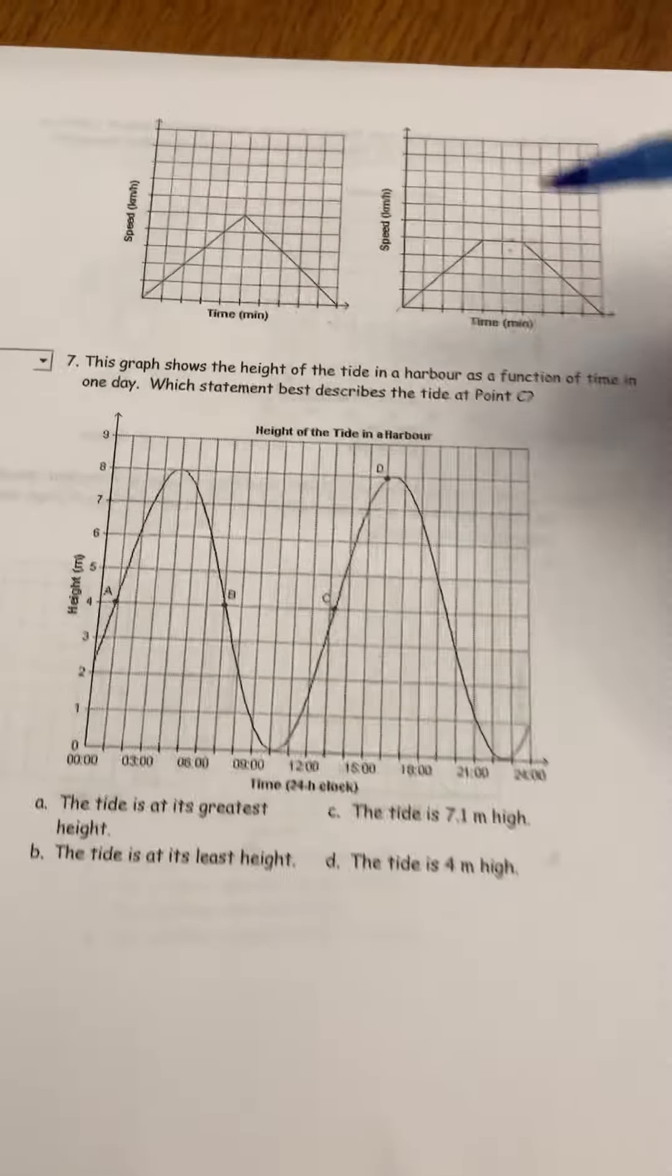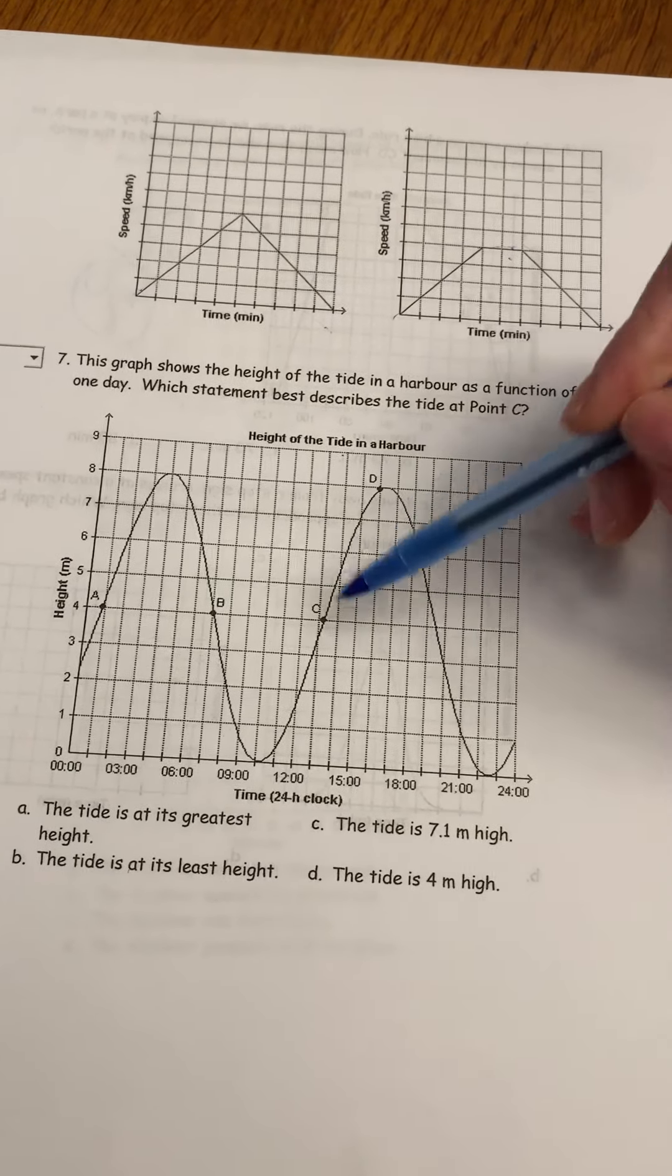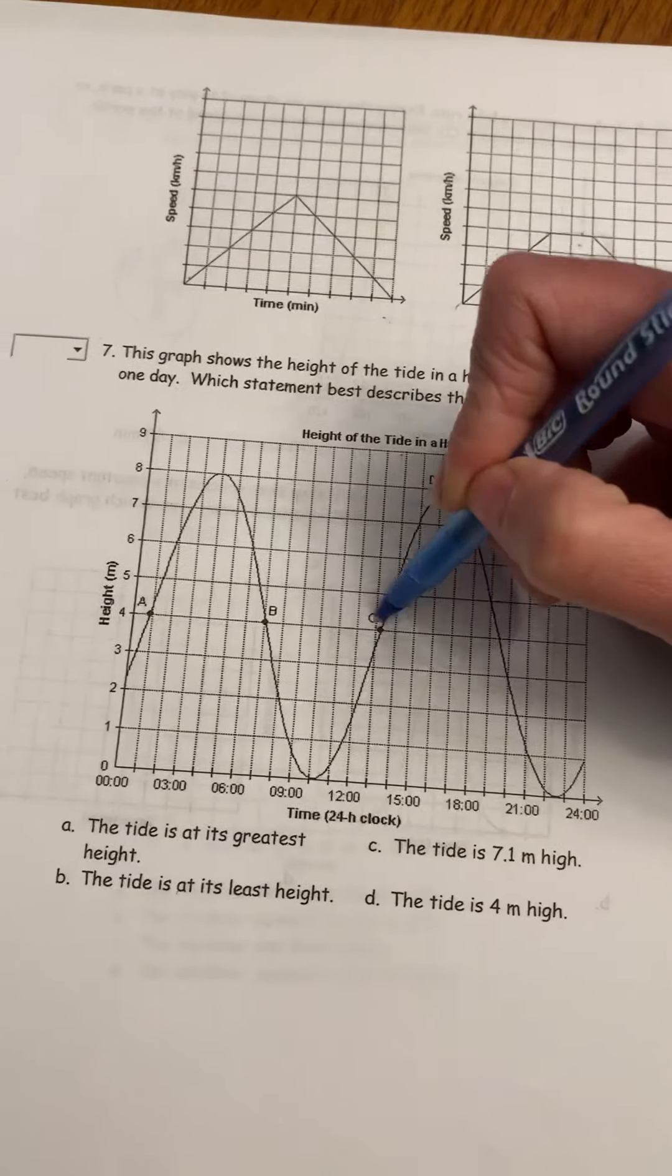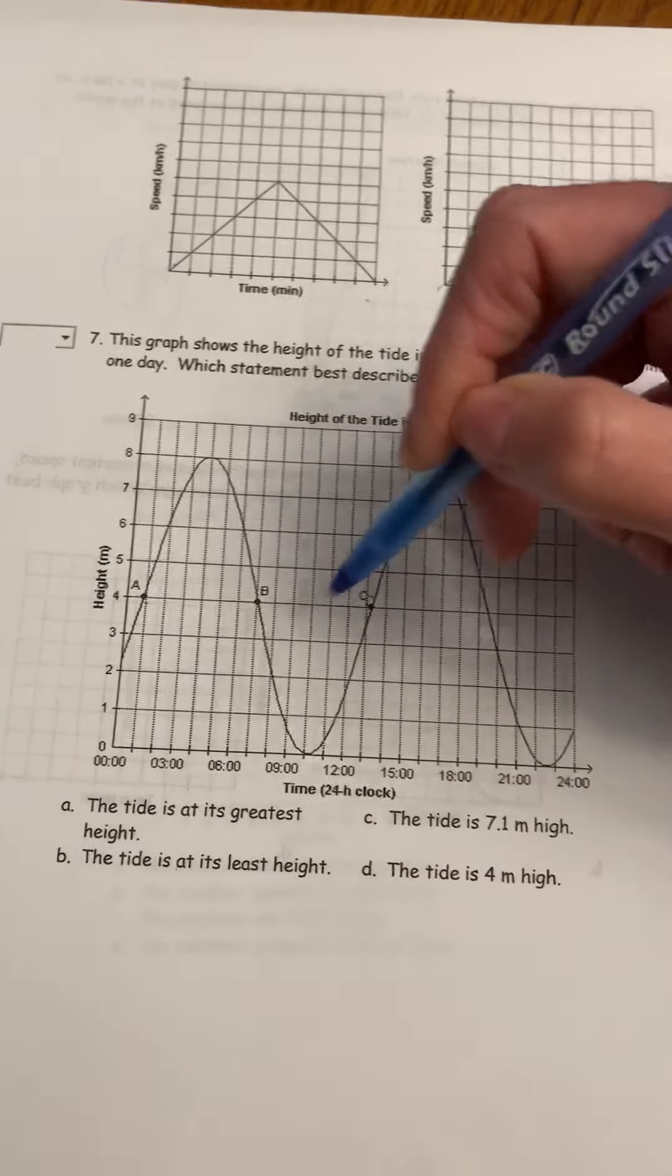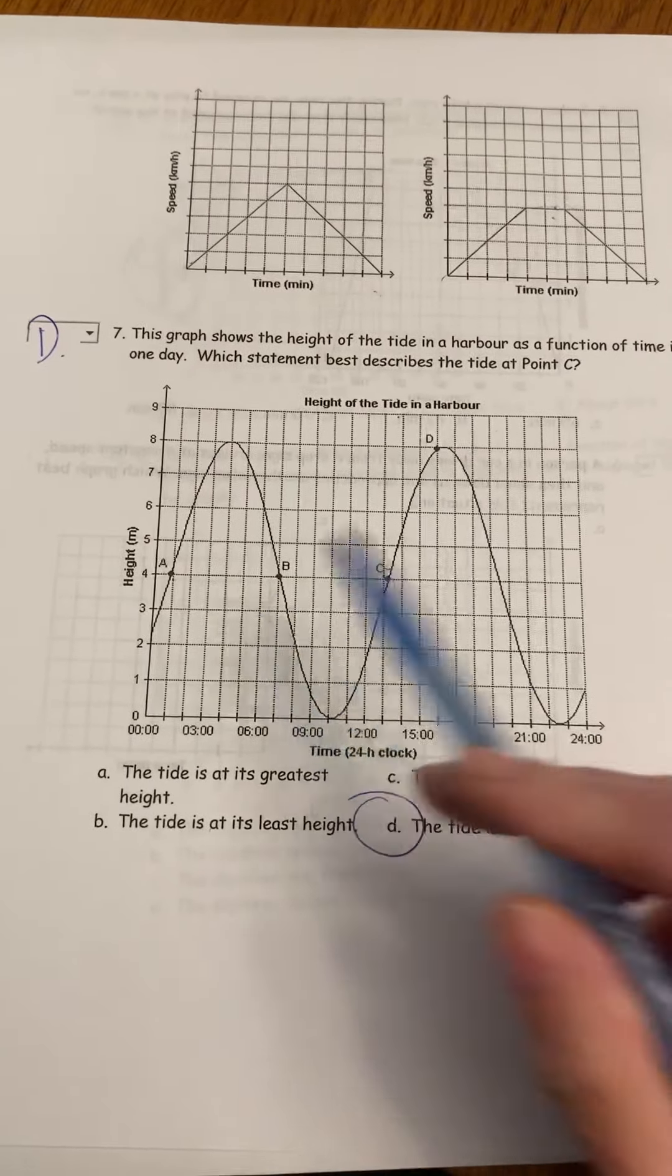This graph shows the height of a tide in a harbor. Which statement best describes the tide at point C? So at point C, the tide is approximately four meters high. So that's what your answer should have been there, D.